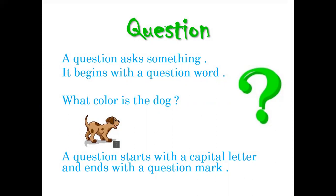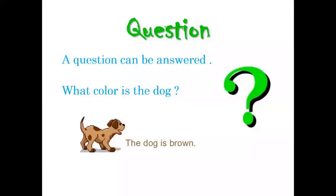The question asks something, and it begins with a question word — like what, do, when, where, who. So like: what color is the dog? How old are you? How are you? Do you like pizza? Do you like ice cream? Where were you? The question starts with a capital letter and ends with a question mark, and it can be answered. Like, what color is the dog? The dog is brown. How are you? I'm good. How old are you? I'm eight years old. What's your favorite color? What do you like to do? The question can be answered.